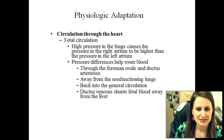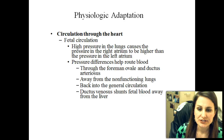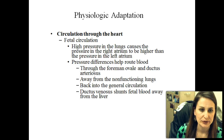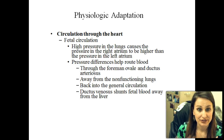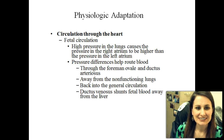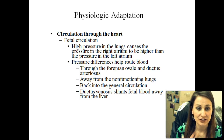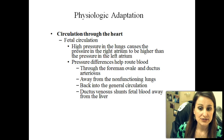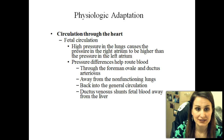The three ducts are the foramen ovale, ductus arteriosus, and ductus venosus — which is in the liver. Pressure differences help route the blood through. The differences are different than you and I. Away from non-functioning lungs, because the lungs don't need all that circulation; they just need enough to keep that tissue alive, and then back into the general circulation throughout the rest of the body. The ductus venosus shunts that fetal blood away from the liver and back into the body.